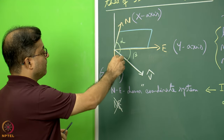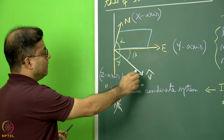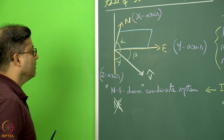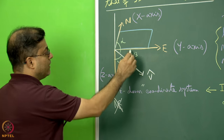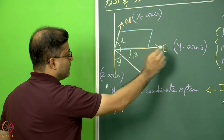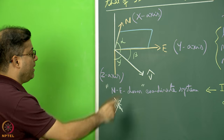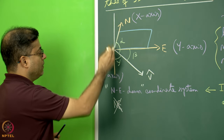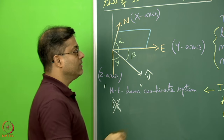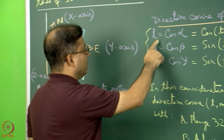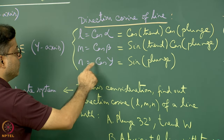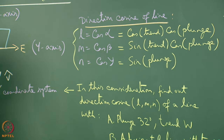If this line is making alpha angle with the x-axis or the north direction, beta angle with the y-axis or the east direction, and gamma angle with the vertical direction, then we can find out the direction cosines: l = cos(alpha), m = cos(beta), and n = cos(gamma), equal to some expression.